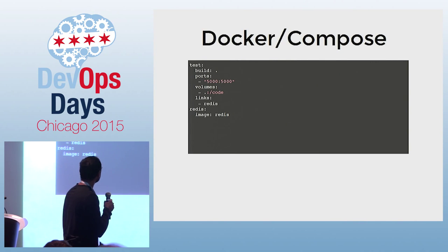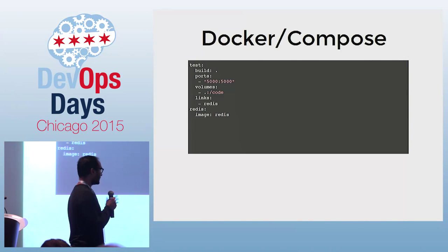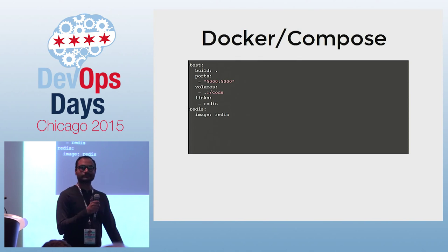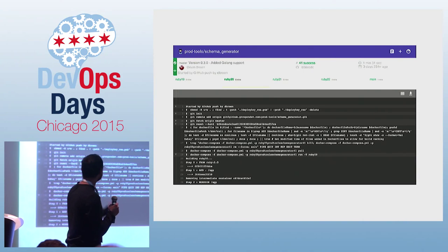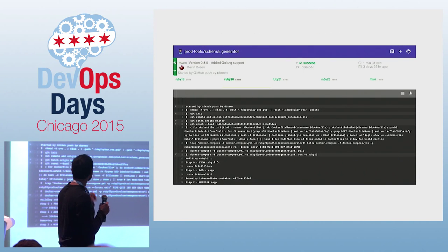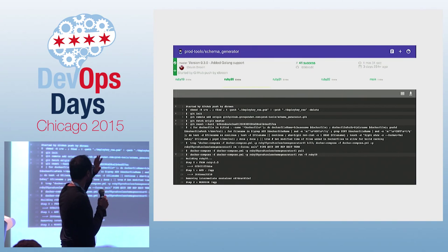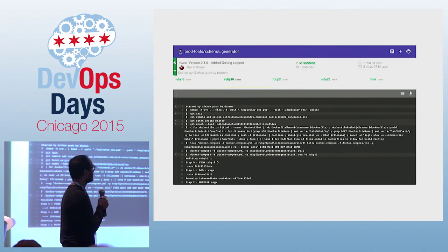This is a Docker Compose file where the dev can specify the build environment, including things like Redis and databases. So this is the end result: when a pull request comes in, Kubernetes spins up five servers and runs tests against five different versions of Ruby. It's like a map-reduce on the build.